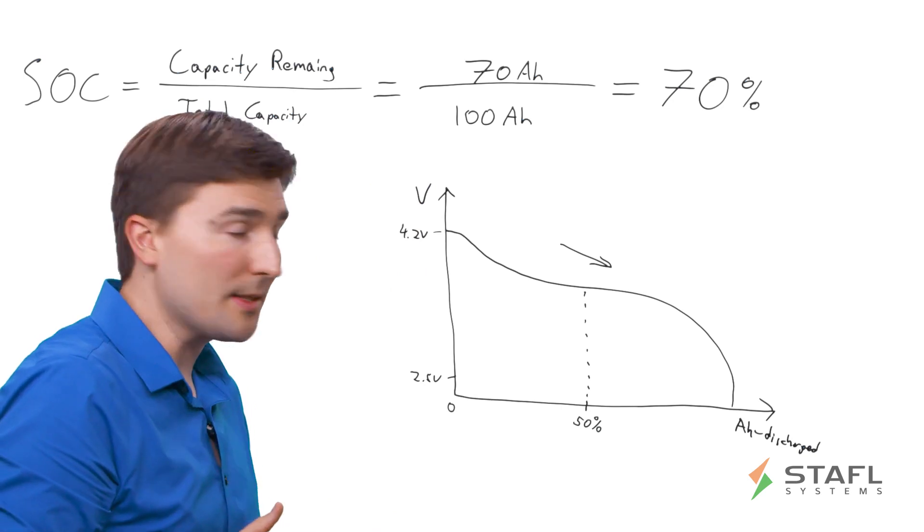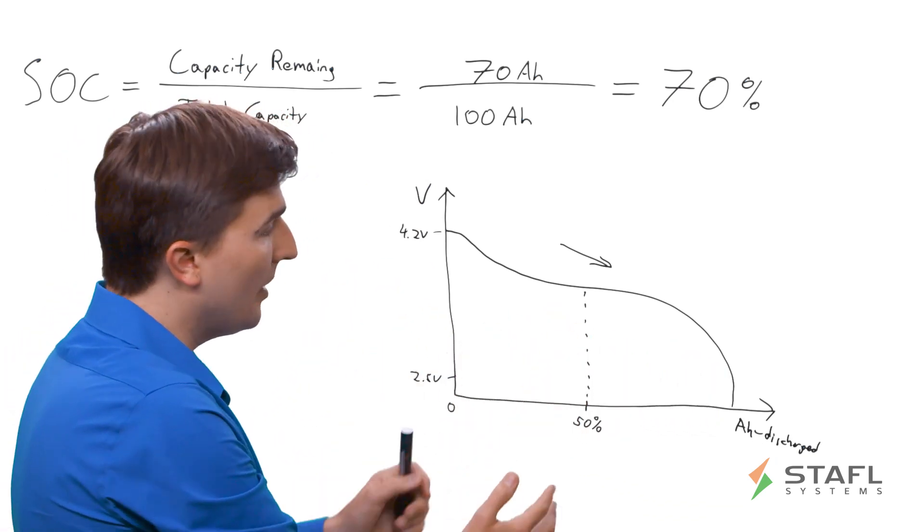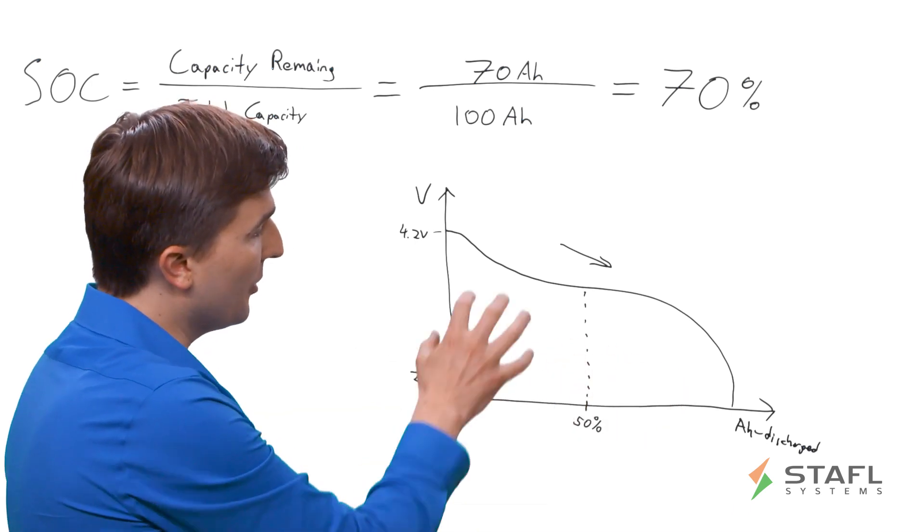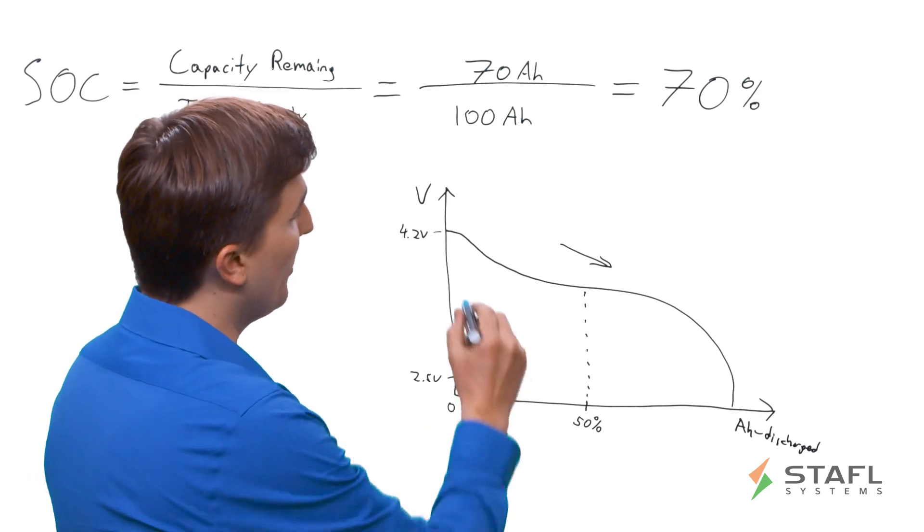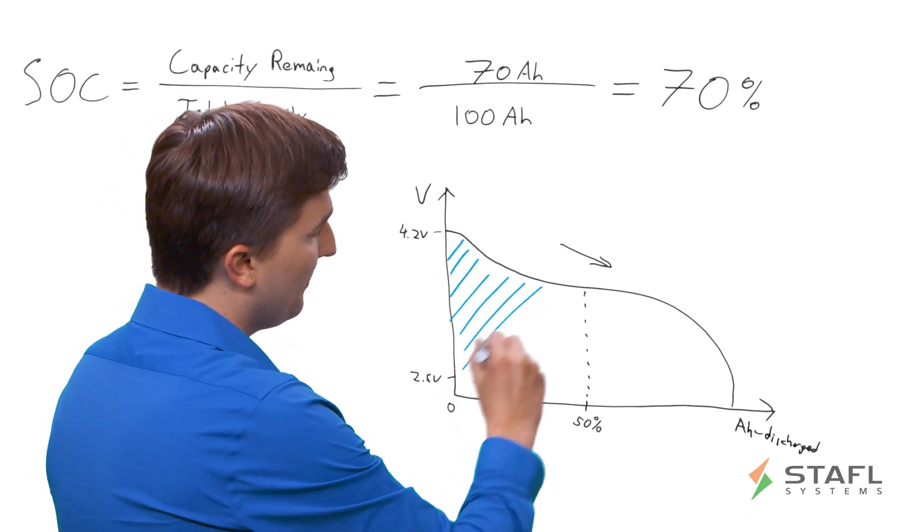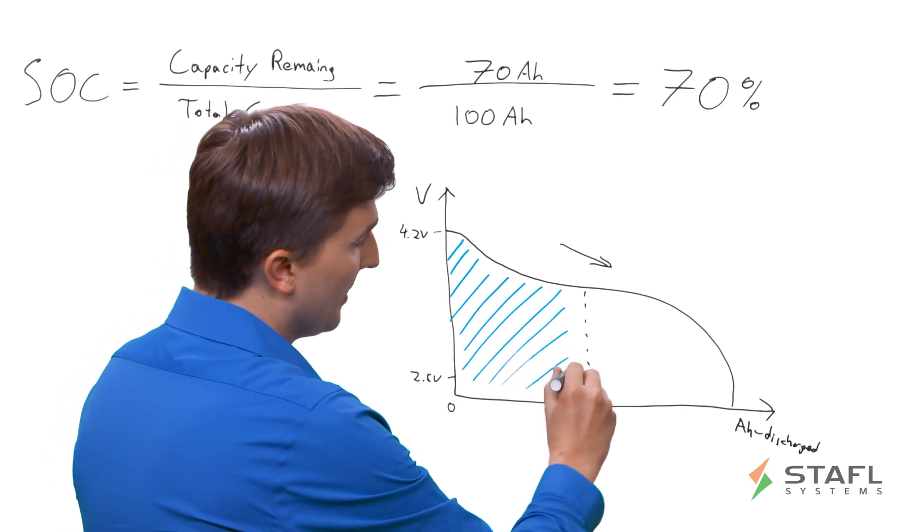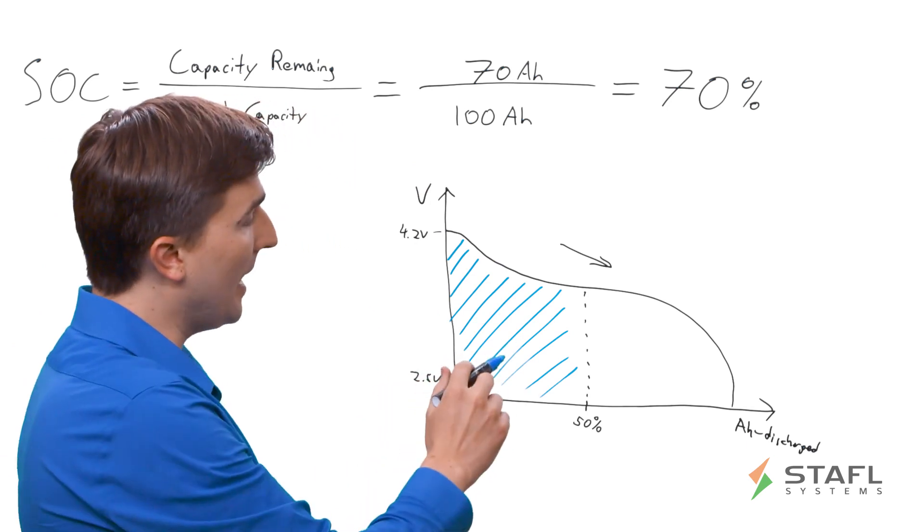One thing to notice is that look at the areas under these relative curves. One side is bigger than the other. There's a lot more energy on the left side of this line than on the right side. And why is that important? Because when you confuse state of charge with a fuel gauge algorithm, this happens.